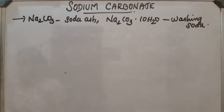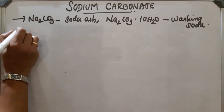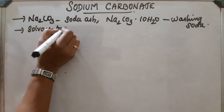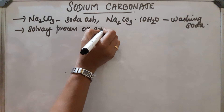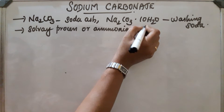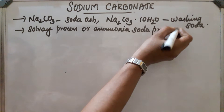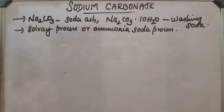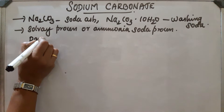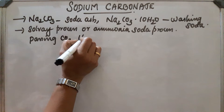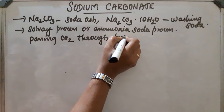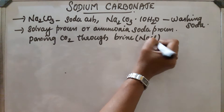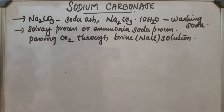Sodium carbonate can be prepared by the Solvay process, also called the ammonia soda process. In this process, the first step is passing carbon dioxide through brine solution — that is, NaCl solution — which is saturated with ammonia.